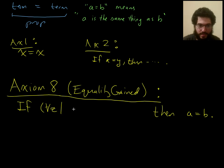And here's what it is. If you can prove that for all Z, Z is in A if and only if Z is in B, then you will have proven that A equals B.